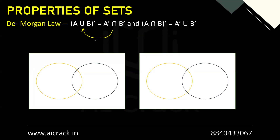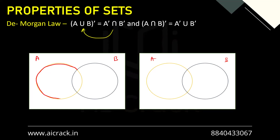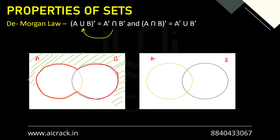Let's prove De Morgan's law with Venn diagrams. We have set A and set B. Let's first find the complement of (A union B). A union B is this region. The complement of that would be the external region — anything outside A union B but inside the universal set. That external region is the complement of A union B.